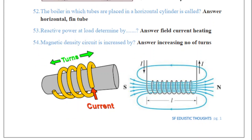Reactive power is the part of complex power that corresponds to storage and retrieval of energy, rather than consumption, on an AC power system. There are two kinds of power: real power, which actually does work, and reactive power, which enables transformers to transform, generators to generate, and motors to rotate.